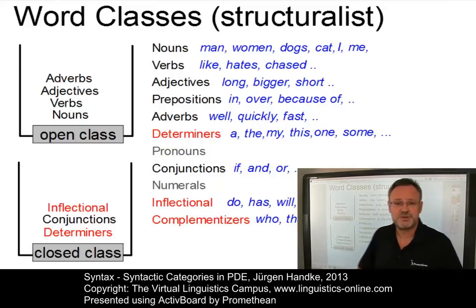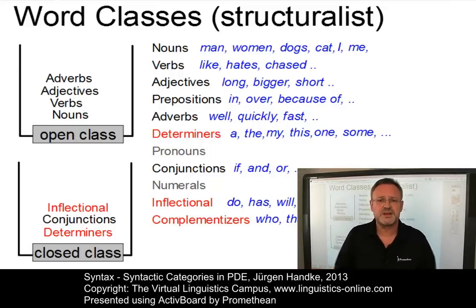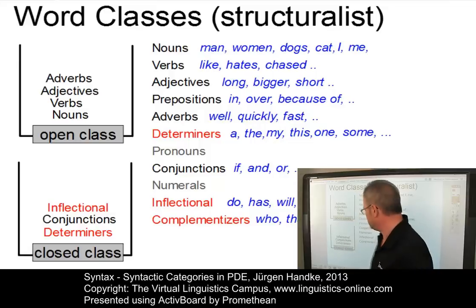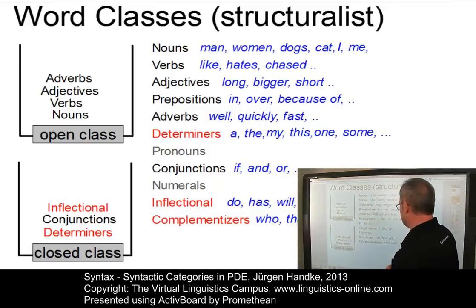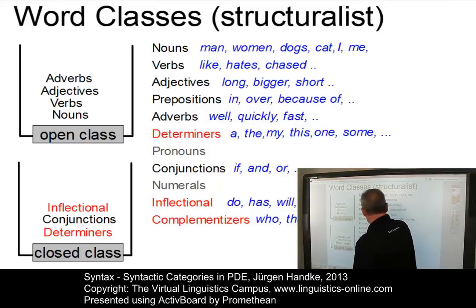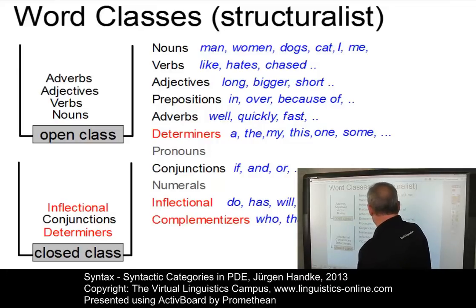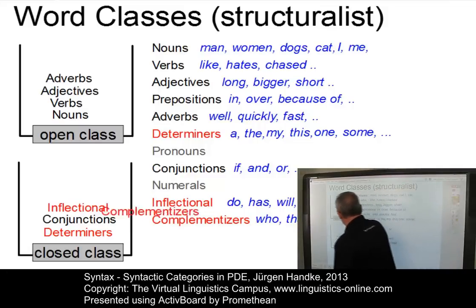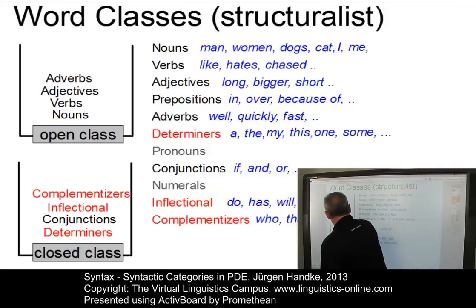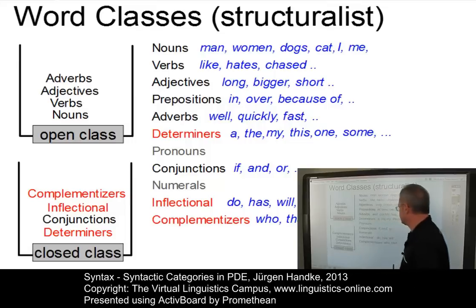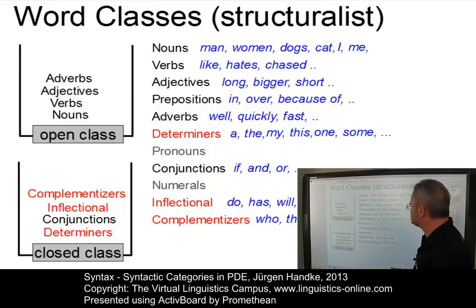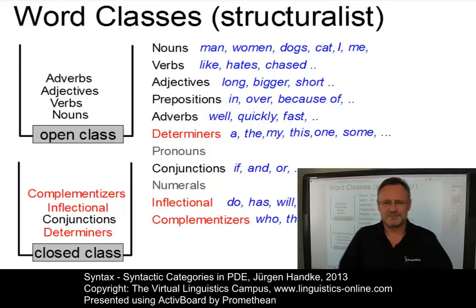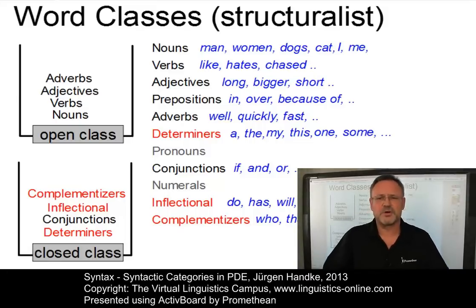Some languages express those by means of auxiliary verbs; others integrate them in the verb itself. One of the final new classes is the class of complementizers, which subsumes elements such as who and that, and is also a closed class. Pronouns and numerals are not associated with or given a special class anymore.